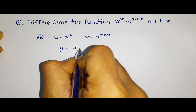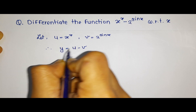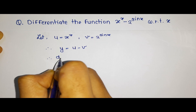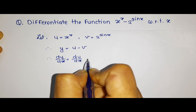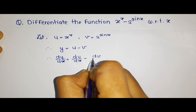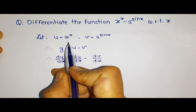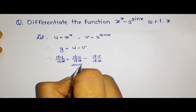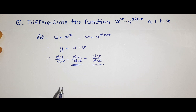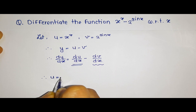Therefore y is equal to u minus v. Now if we have to find the differentiation of this term, we will find dy by dx is equal to du by dx minus dv by dx. Instead of solving this as a whole equation, we separate it into two parts. We will first solve for du by dx, and then come back to dv by dx.